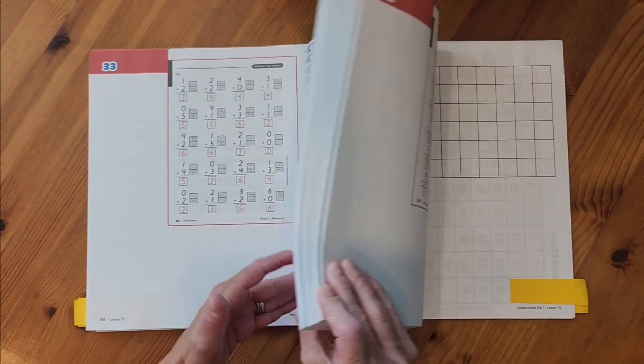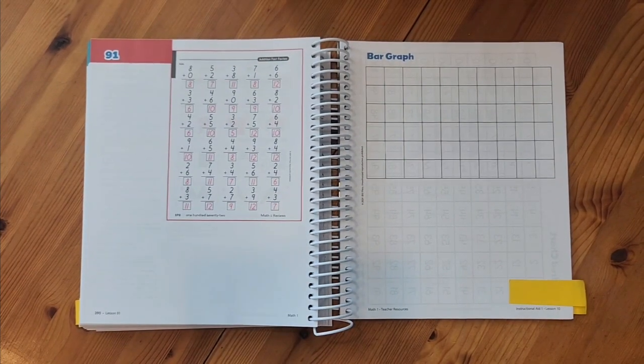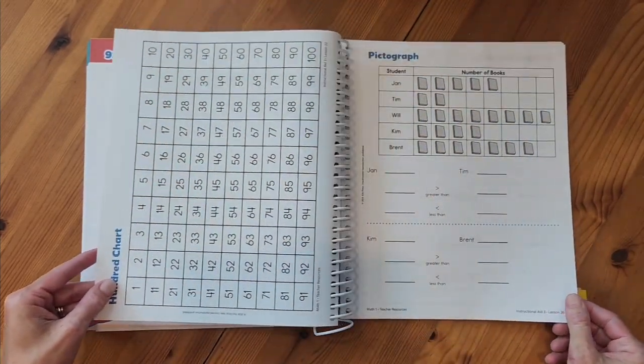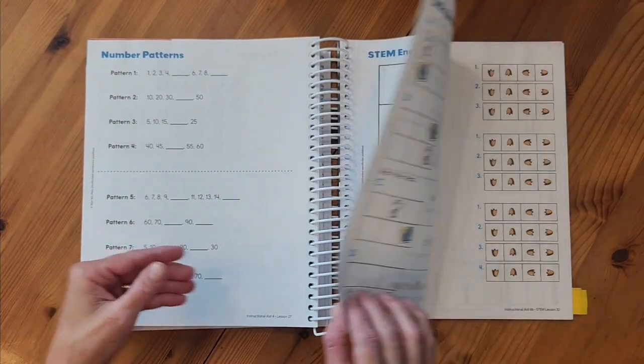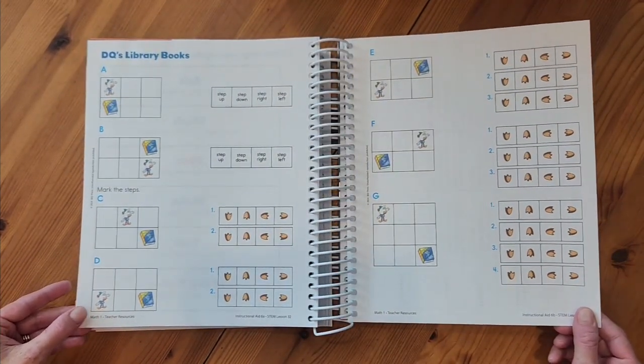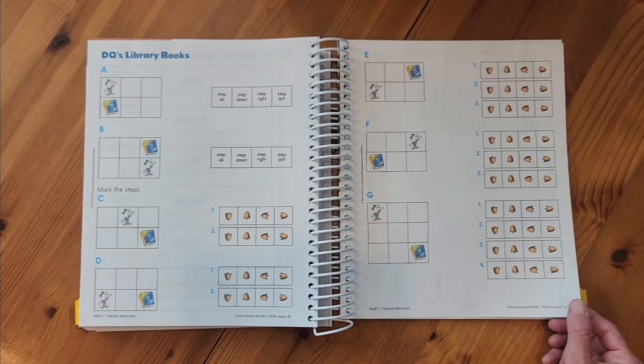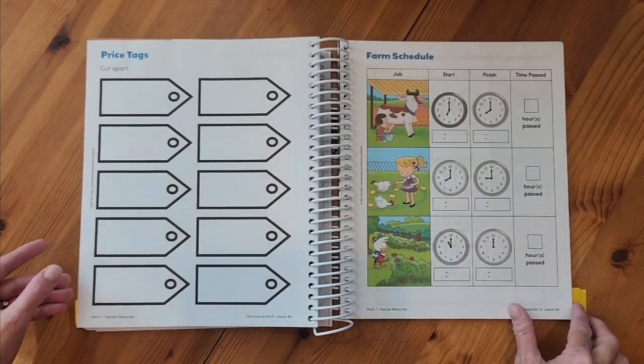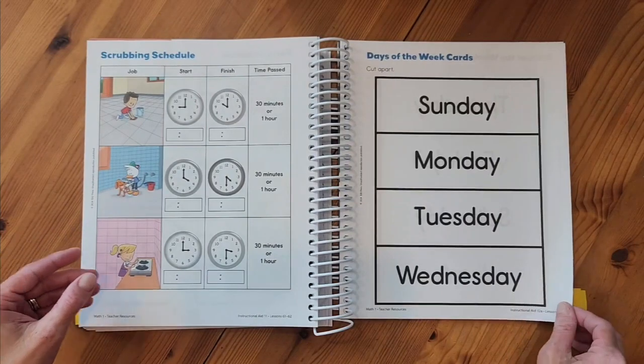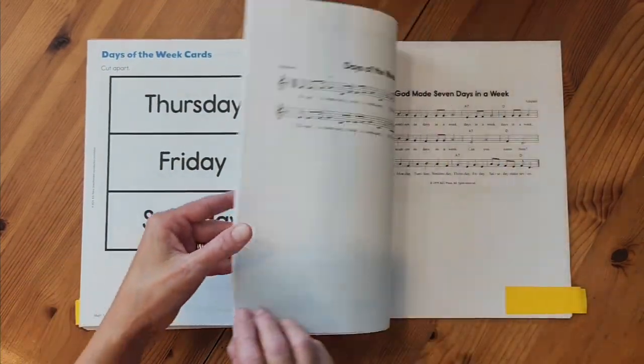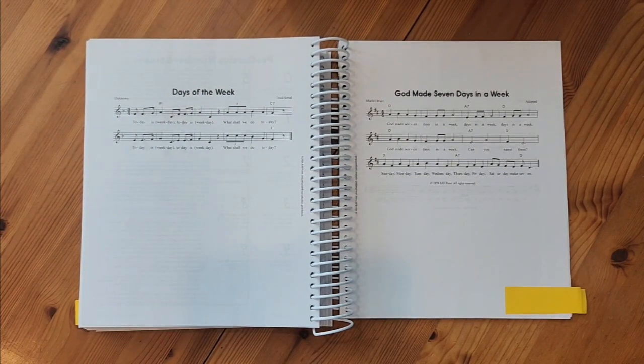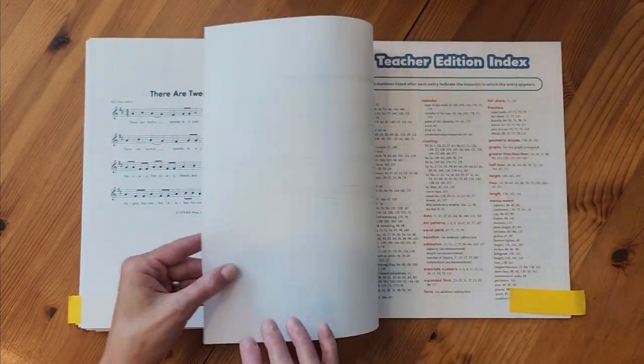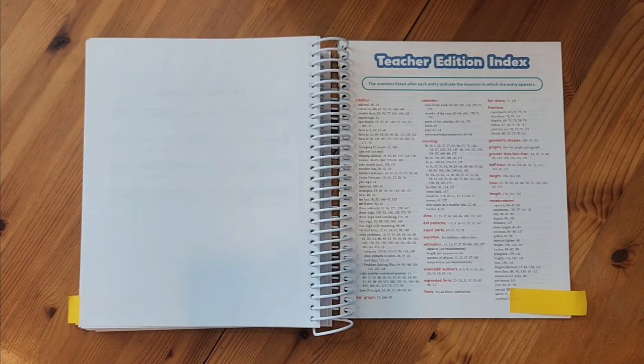Let's jump ahead now. These are the instructional aids so anytime you need an instructional aid you're going to come to the back of the book. And those will be here for you. Here's all those duck feet for the DQ assignment and helping DQ get library books. There's also some songs towards the back of the book. So if you were curious where those songs are, those are in the back of the teacher edition book as well. And then we wrap up the teacher edition book with an index.